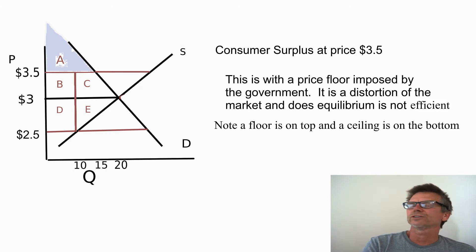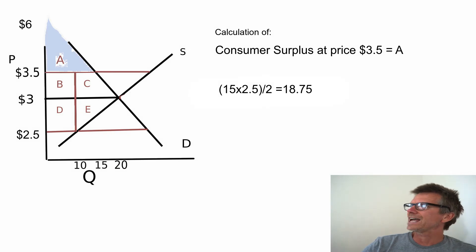In this case, let's say that the government imposes a price floor. This is government intervention. It's a distortion of the market. And the market does not rest at an efficient equilibrium. In this case, the consumer surplus is only triangle A.